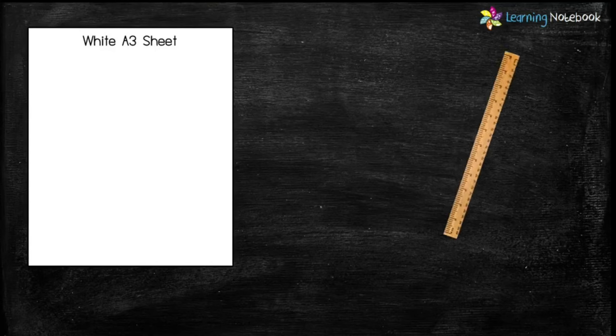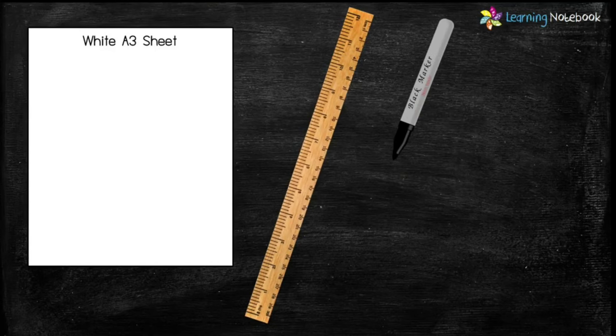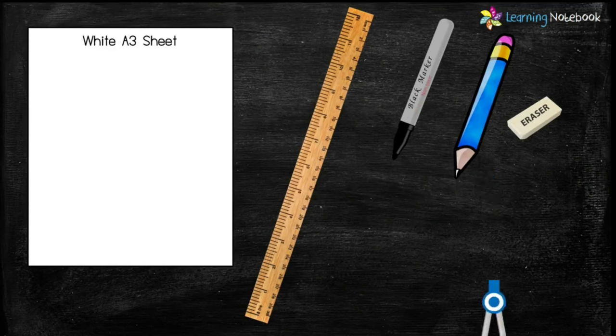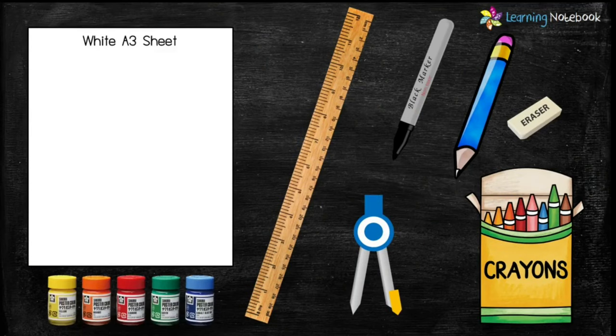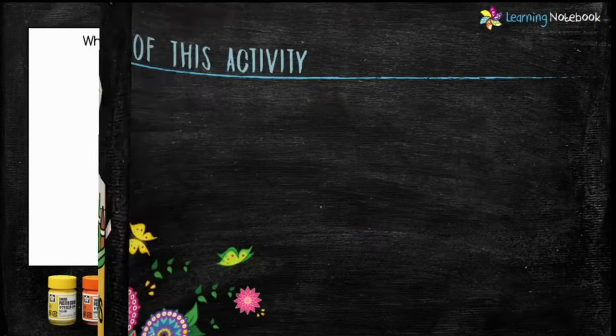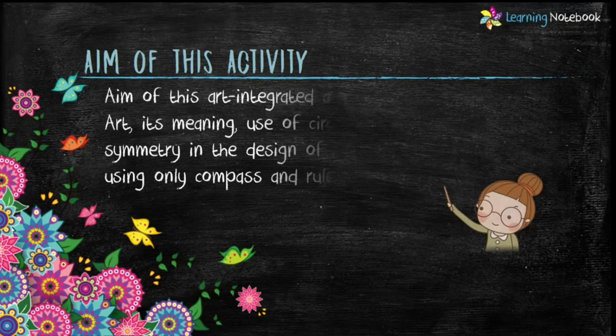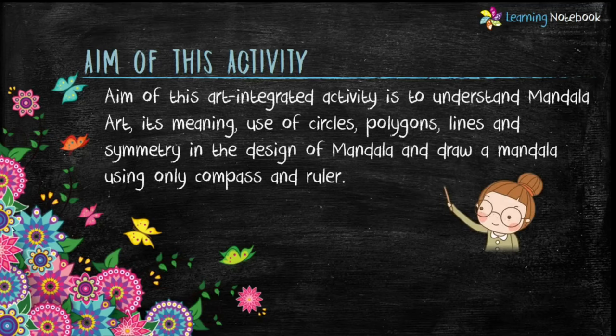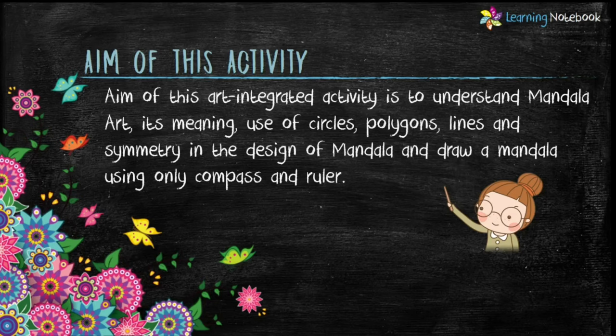For this activity we need one A3 white sheet, a ruler, a black marker pen, a pencil, an eraser, a compass, a box of crayons or poster colors. The aim of this art integrated activity is to understand mandala art, its meaning, use of circles, polygons, lines and symmetry in the design of mandala, and then draw a mandala using only compass and ruler.